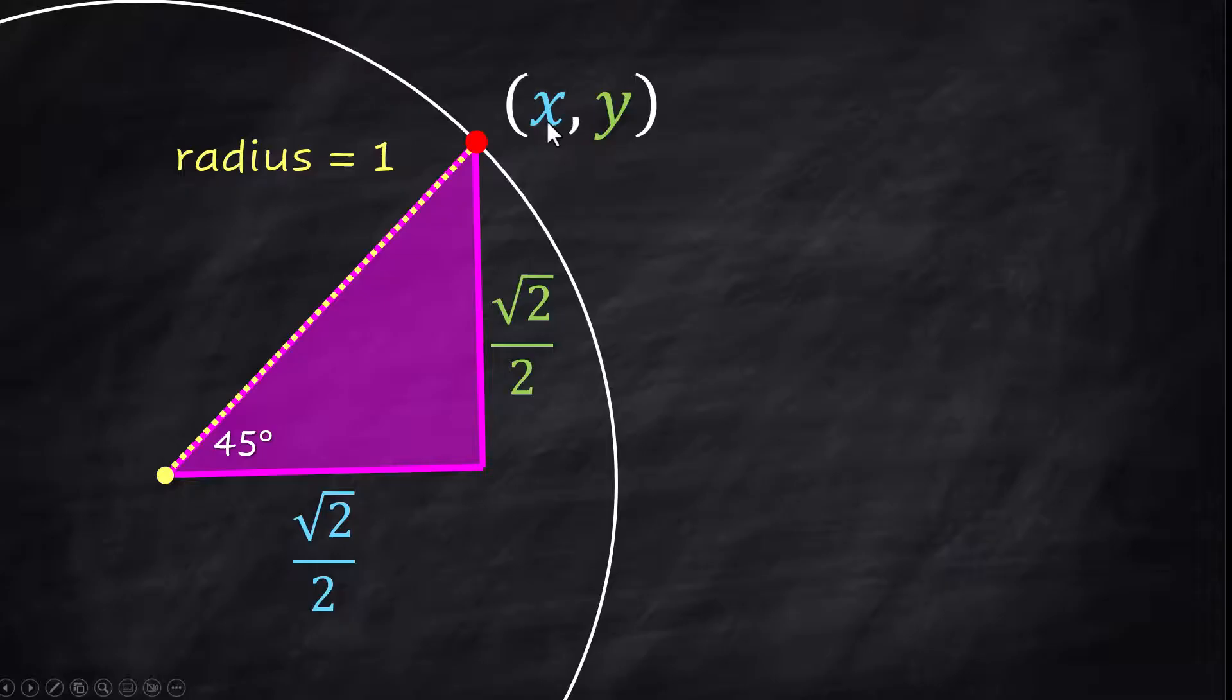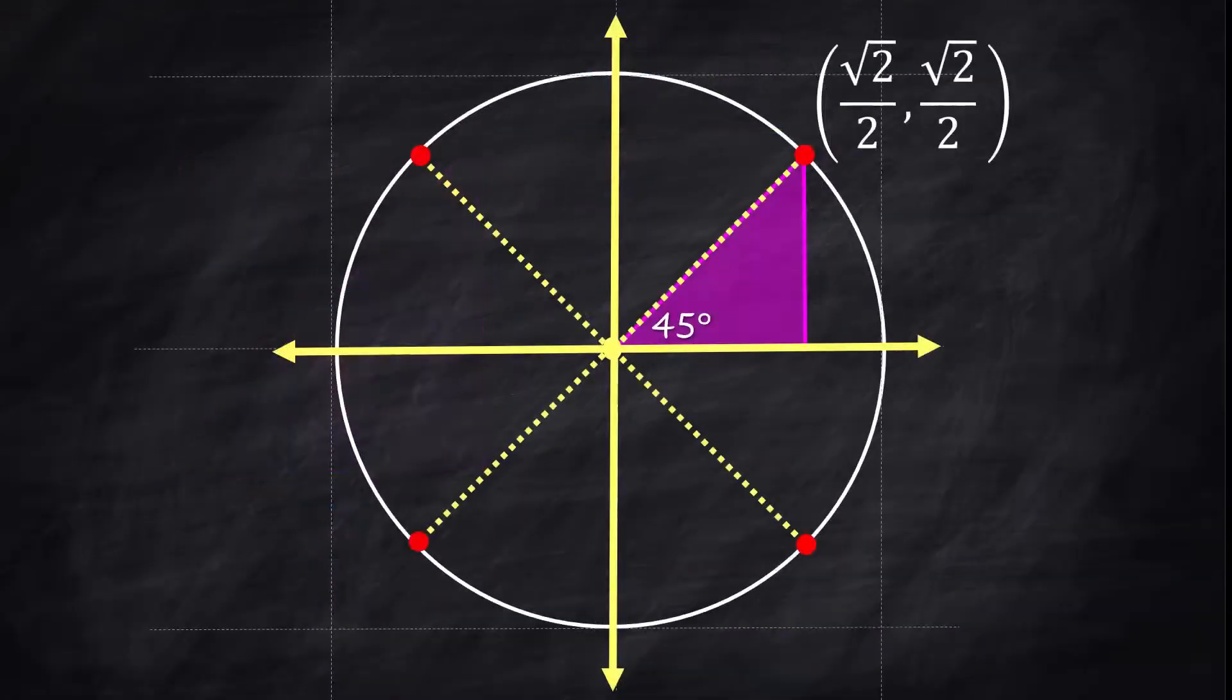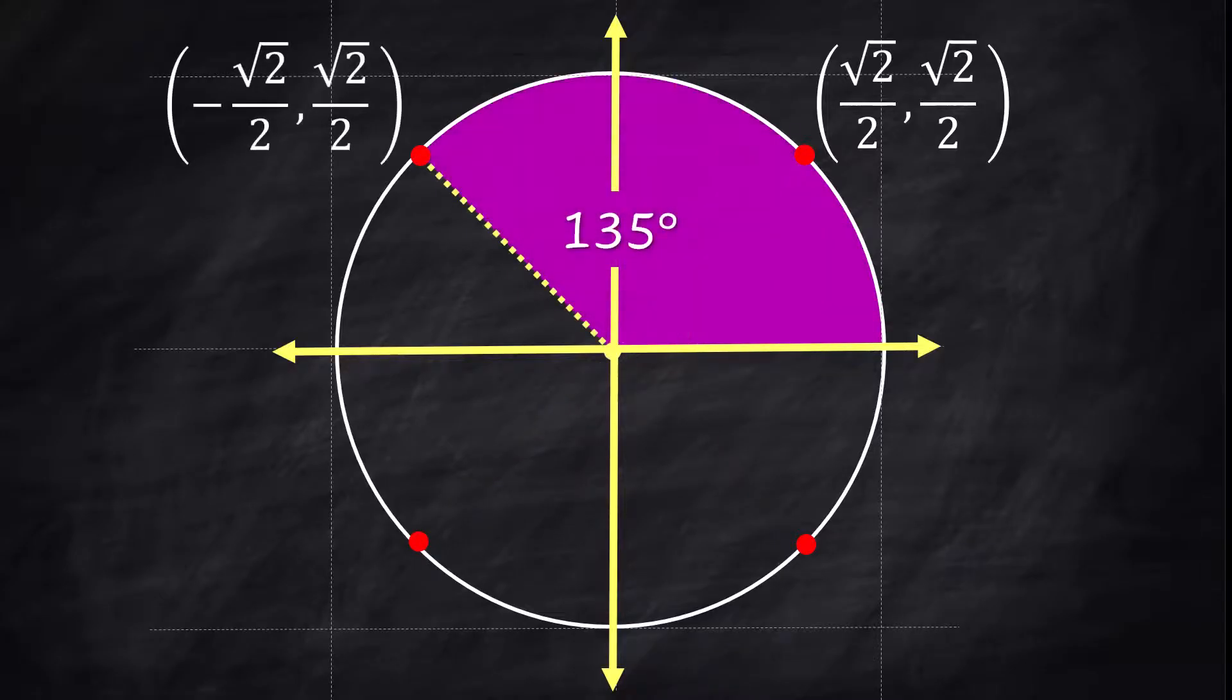Now remember what we're doing here is we're trying to find xy coordinates for this point on the circle and the x value is square root of two over two and the y value will be square root of two over two because those are the side lengths of this triangle. Now let's expand that out to the other points that are on the circle. 45 degrees, they're both positive because it's in quadrant one. When you move over to the 135 degree angle at this point, the x becomes negative and the y stays positive.